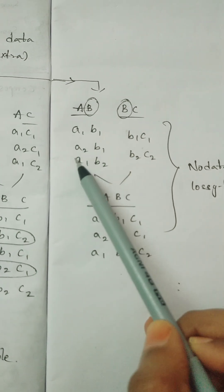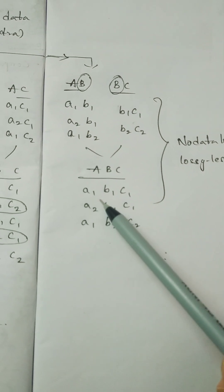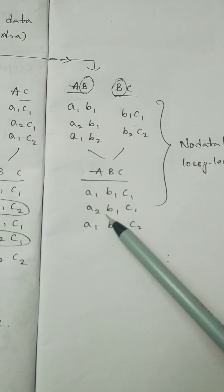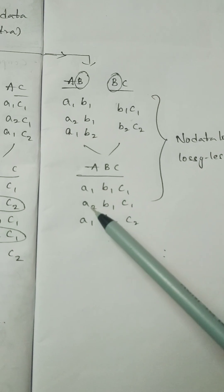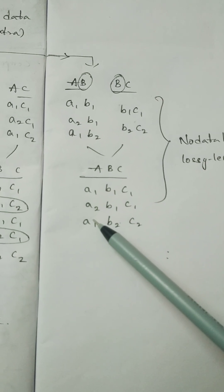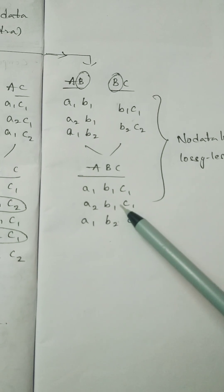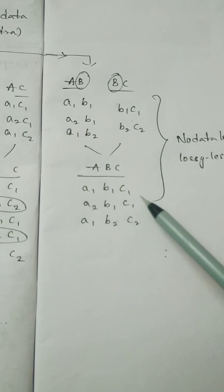So here A1, B1 we took like this example. Here when we combine both, we get the actual data. Here we did not get any extra kind and any extra trouble. So this is no data losing. So this is called lossless decomposition.